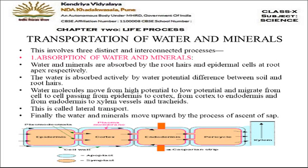Transportation of water and minerals involves three distinct and interconnected processes. The first is absorption of water and minerals by the lateral transport system. Water and minerals are absorbed by the root hairs. Root hairs and epidermal cells at the root tip are helpful in absorbing water and minerals — root hairs absorb water and epidermal cells absorb minerals.